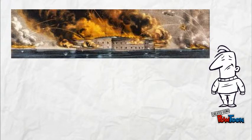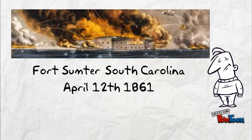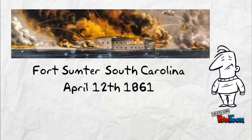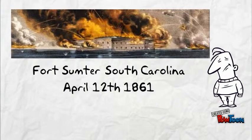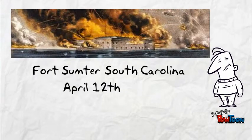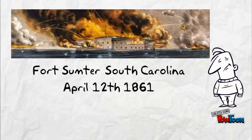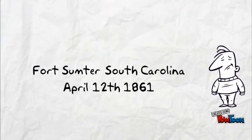Fort Sumter. April the 12th, 1861. Confederate forces fired on Fort Sumter, which was unable to effectively fight back. The United States surrendered Fort Sumter, and Union forces left the following day. The firing upon Fort Sumter was the opening engagement of the American Civil War.